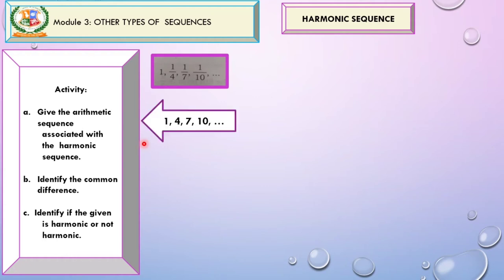For the first step, let us give the arithmetic sequence associated with the harmonic sequence. In order to do this, just find the reciprocal of the given. So from the given, we have 1, 4, 7, 10, and so on. Now let us now identify the common difference. To identify the common difference, just subtract the second term from the first term. So 4 minus 1 is 3, 7 minus 4 is 3, and so on. If you have a common difference, then you can now identify if the given is harmonic or not. But if the common difference is 3, just like in the given, and we have a common difference, therefore, the given sequence is harmonic.